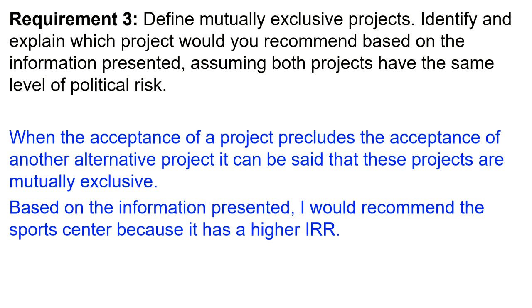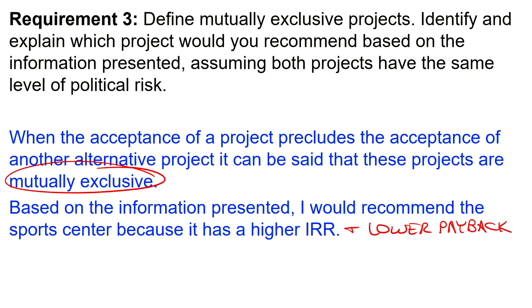Requirement 3 asks us to define mutually exclusive projects and make a recommendation. When the acceptance of one project precludes the acceptance of another alternate project, those projects are mutually exclusive — if we accept A we can't accept B, and vice versa. Based on the information presented, the sports center project is recommended because it has a higher internal rate of return of 25.5%. You could also justify it using the lower payback period of three years, or mention both the higher IRR and lower payback together.